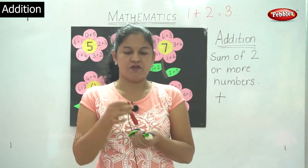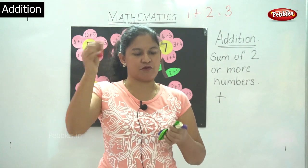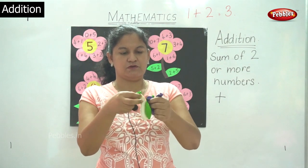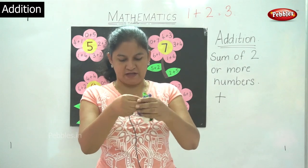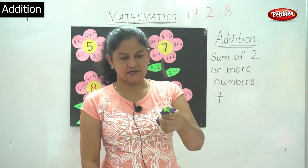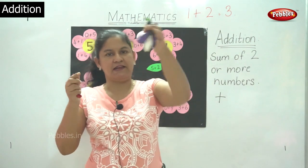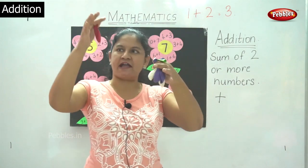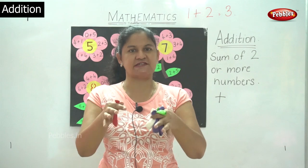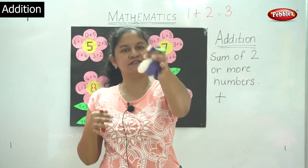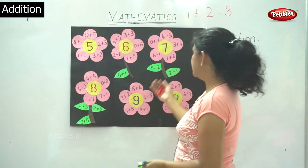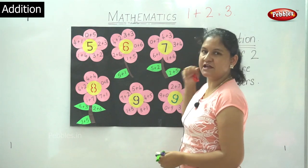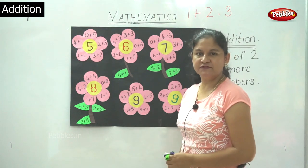So I have 1 balloon in my right and I have 2, 3, 4, 5 and 6 balloons in my left. So I have 1 in my right and 6 in my left. So 1 plus 6 gives me 7 or 6 plus 1 gives me 7.